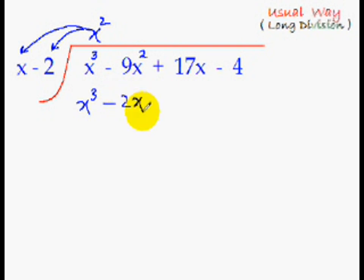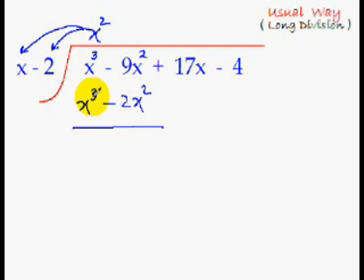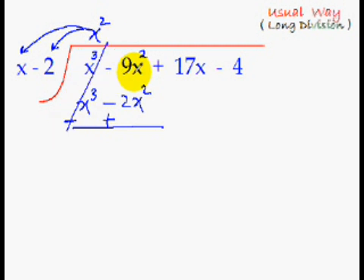Now you subtract these terms. Subtraction in algebra means changing the signs and then adding. Since this is plus x cube, it becomes minus x cube; minus 2x square becomes plus 2x square. The positive x cube and negative x cube cancel each other out. Minus 9x square plus 2x square gives minus 7x square.